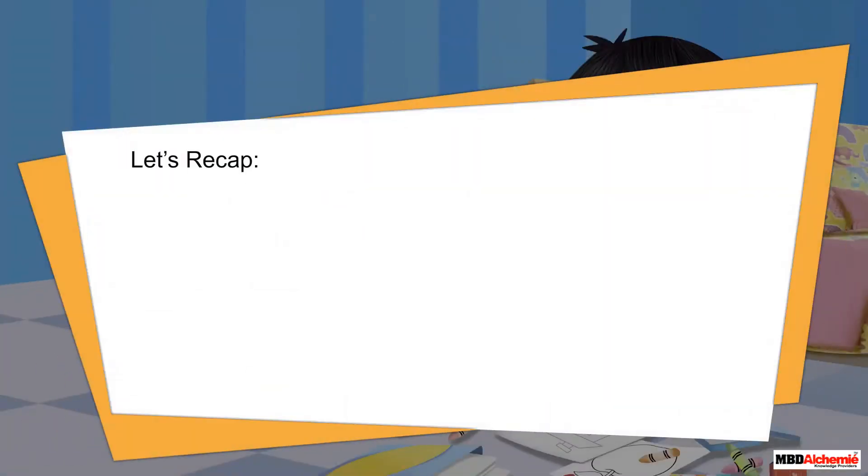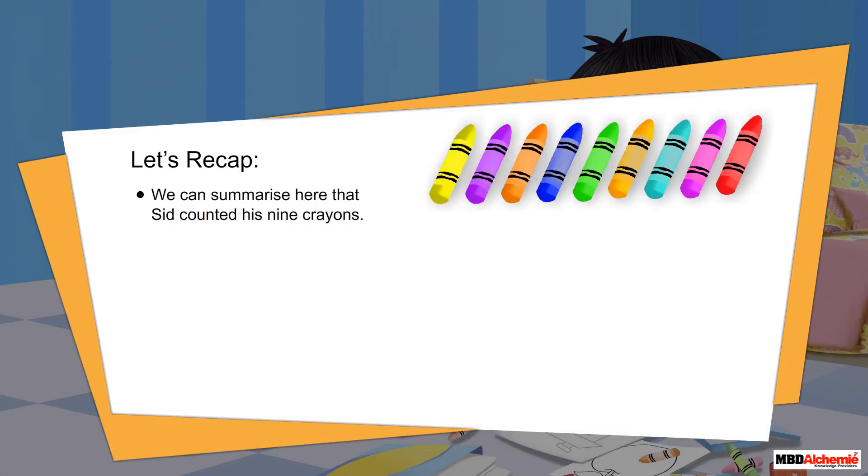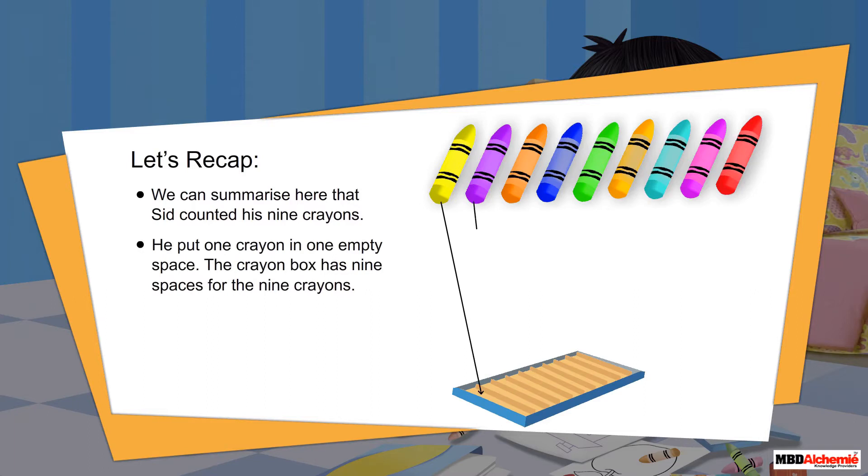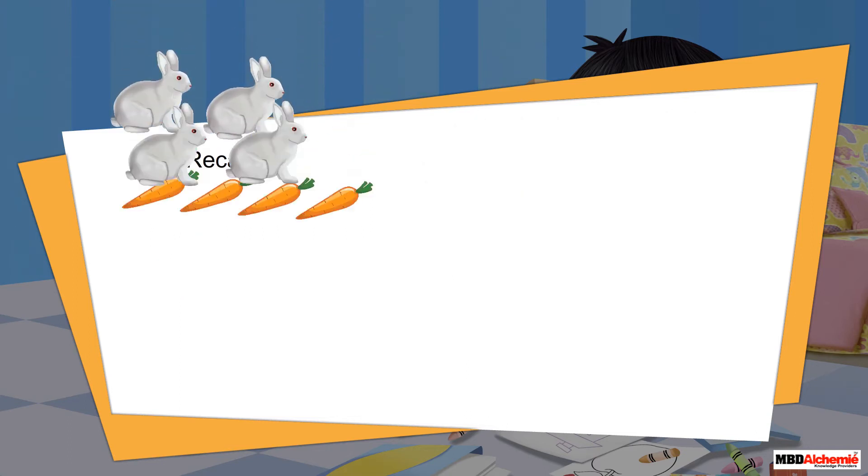Let's recap. We can summarize here that Sid counted his nine crayons. He put one crayon in one empty space. The crayon box has nine spaces for the nine crayons. In the similar way, we can count other objects.